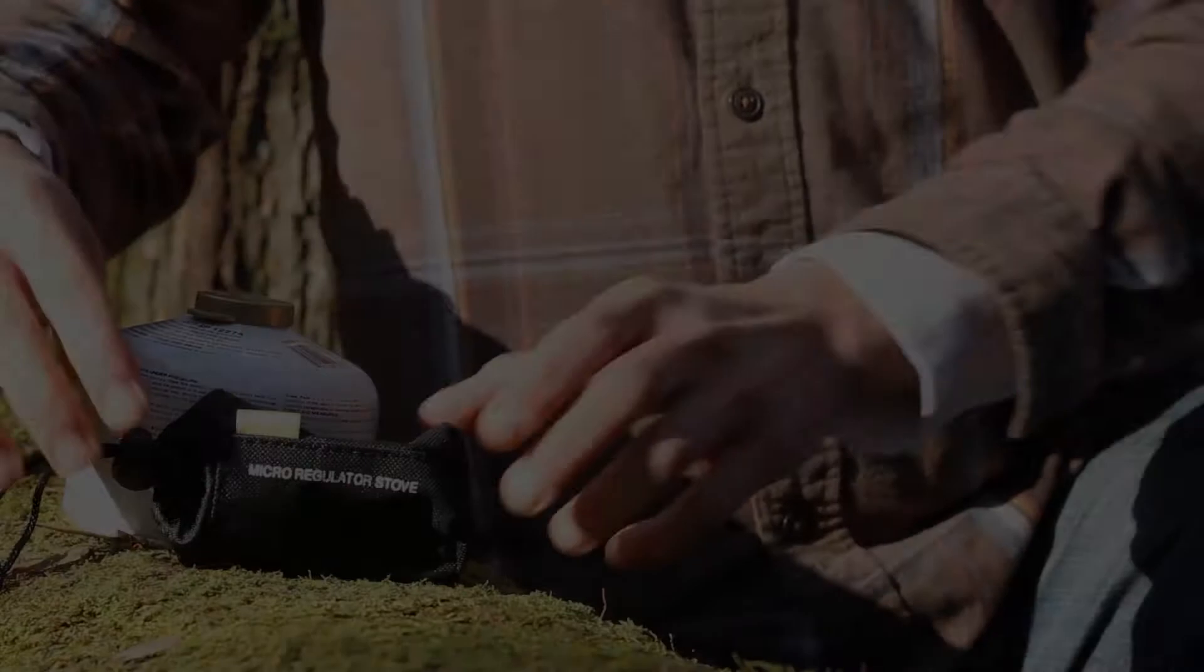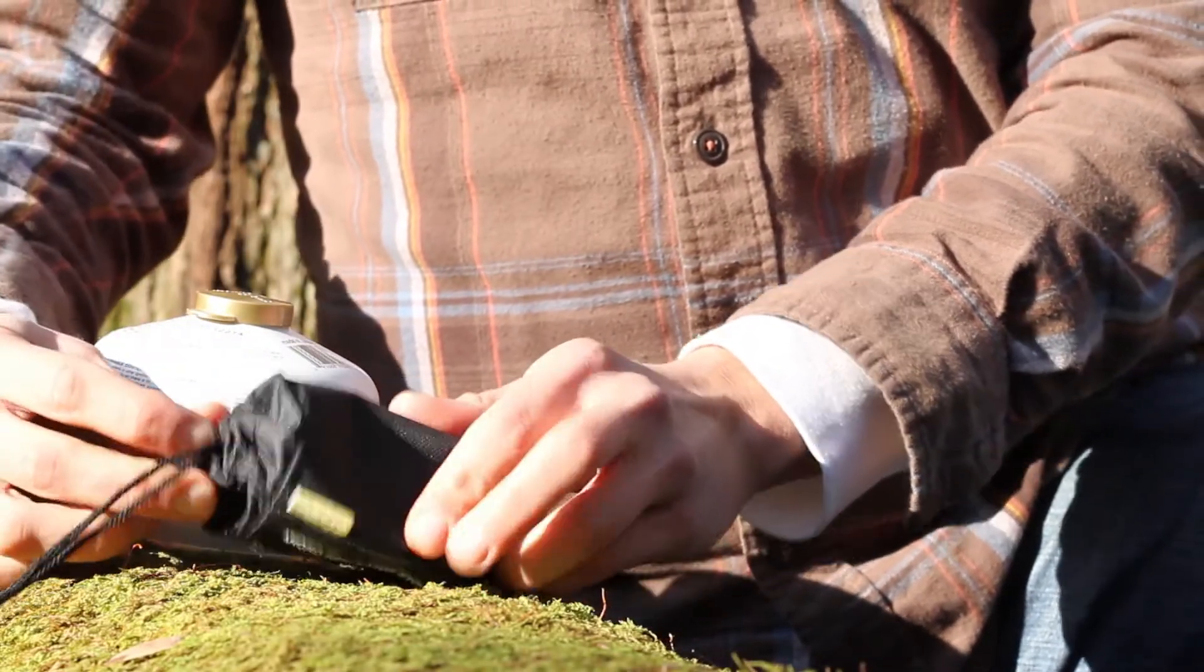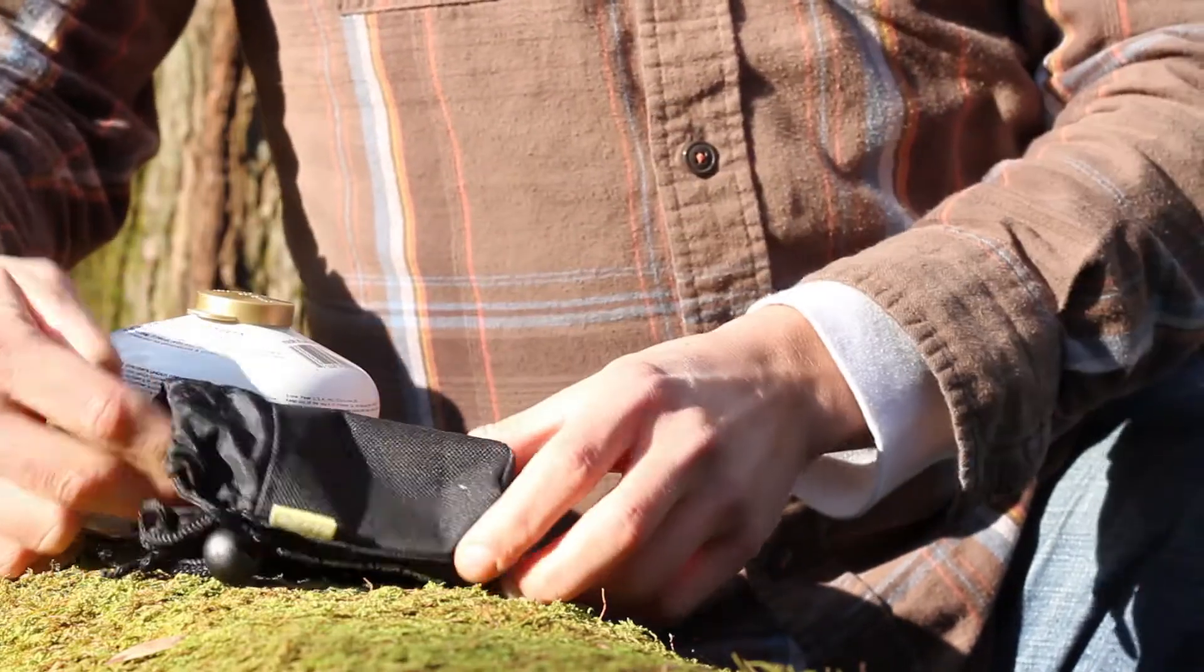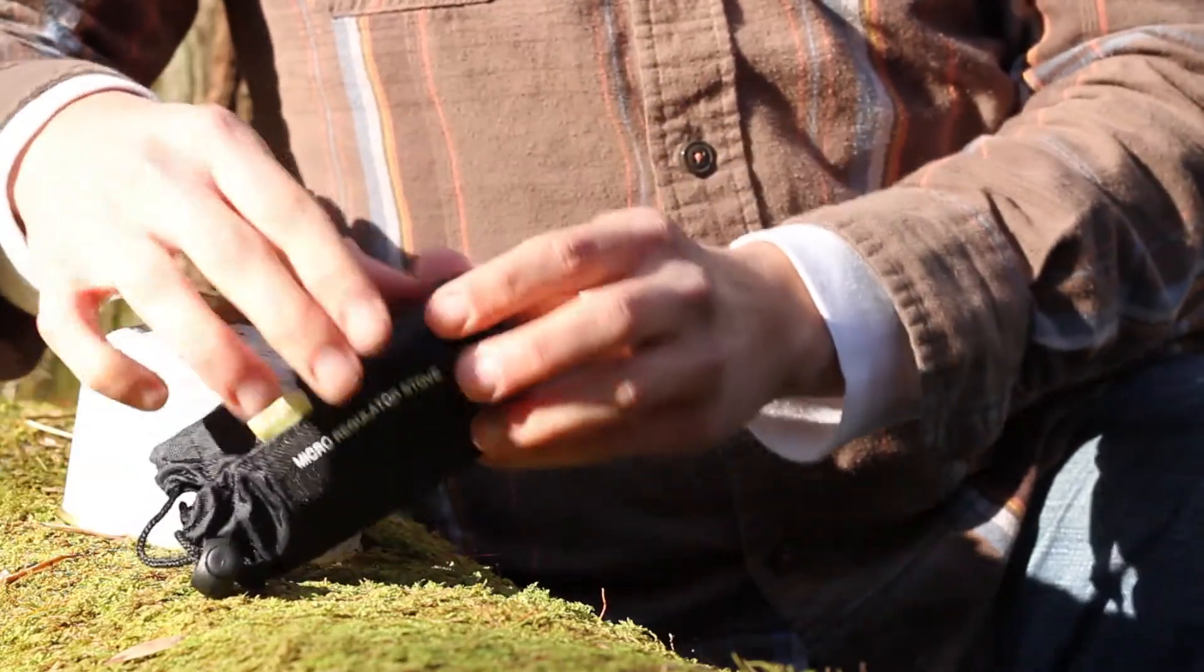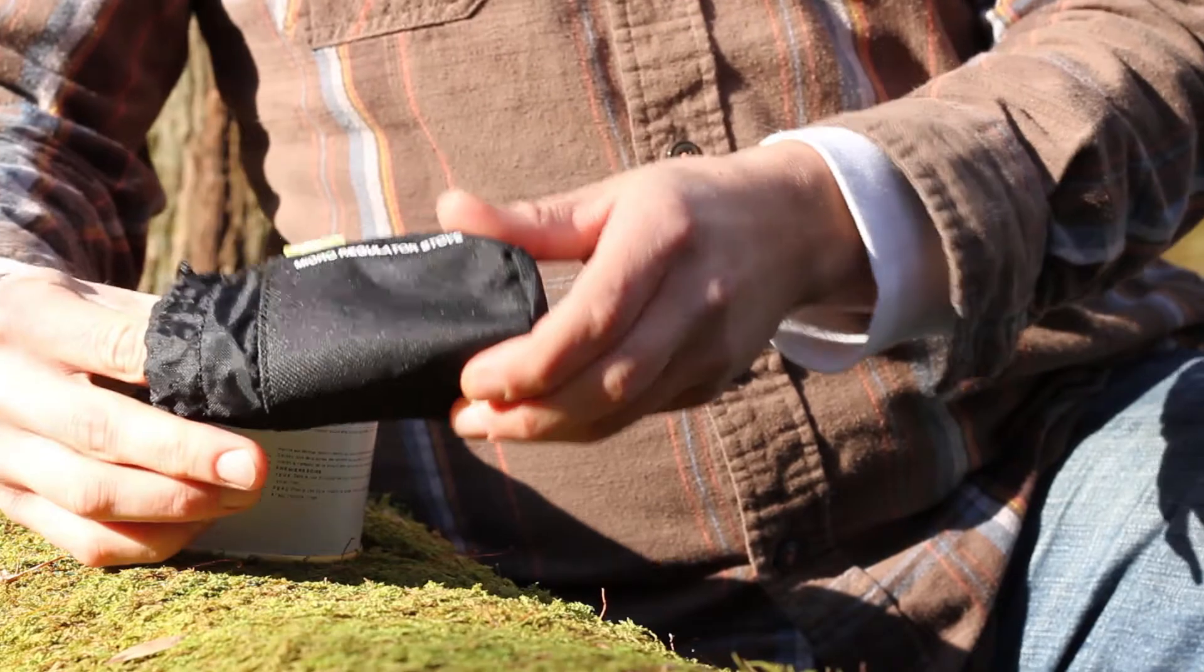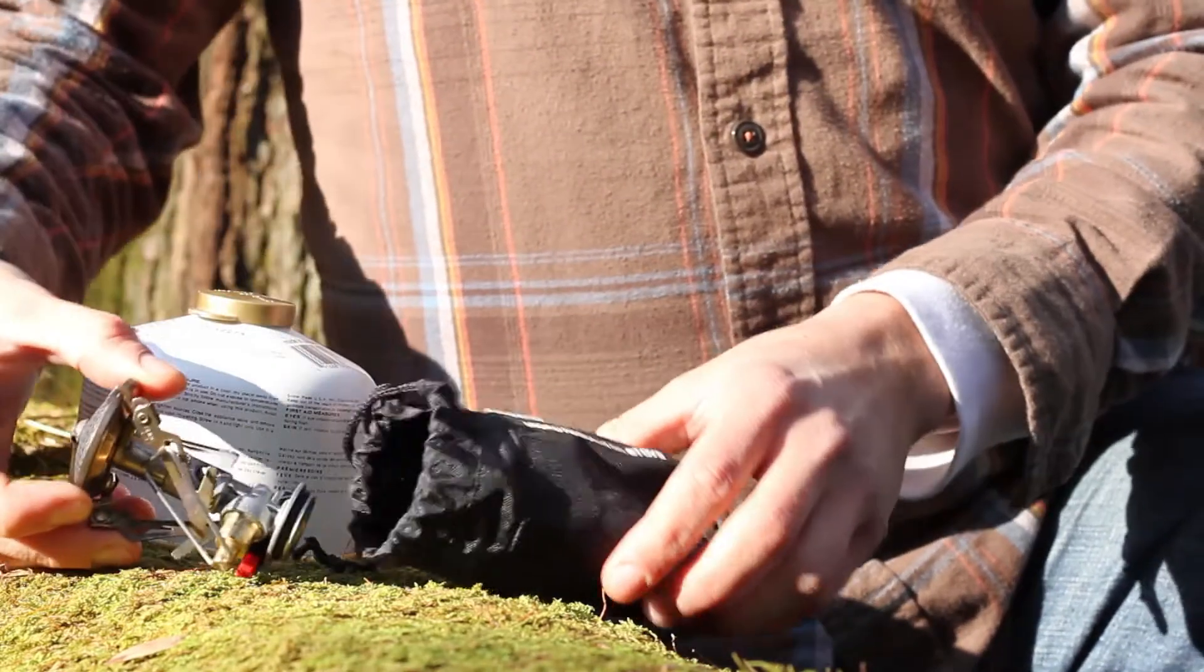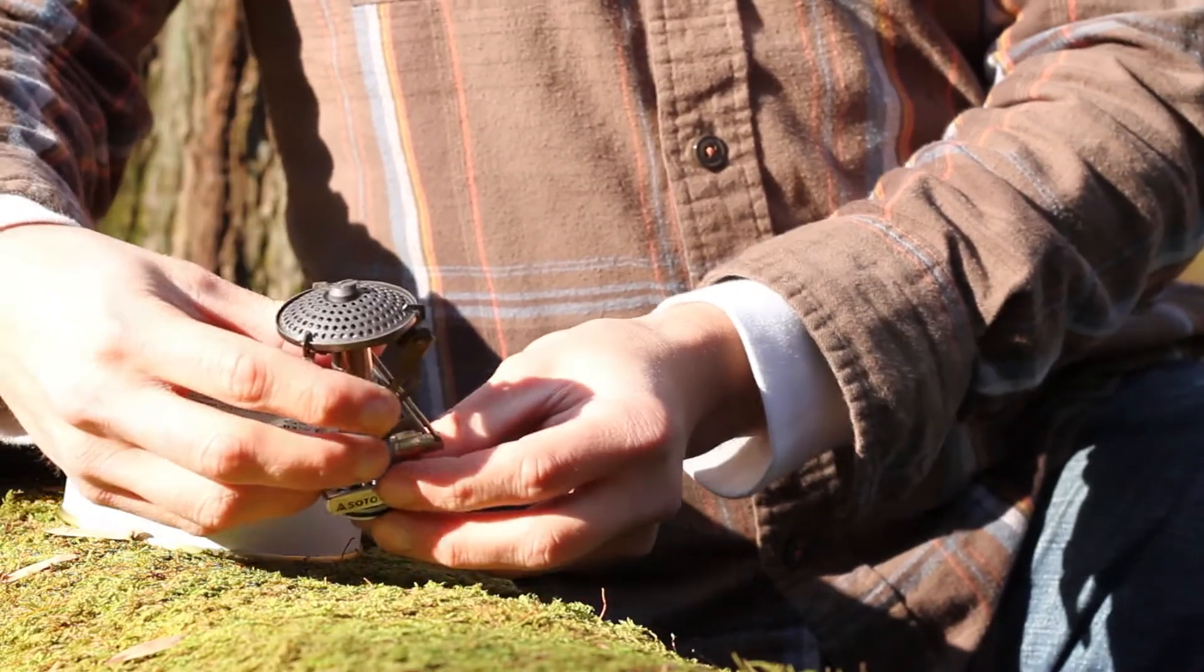If you get a little bit closer I'll show you the stove up close. The stove comes in this black cinched bag. There are other top of canister stoves that come in a plastic protective case which I really like. I'm not sure why Soto didn't do that. It's not a big concern for the stove but it would have been nice.